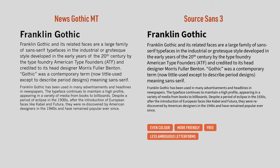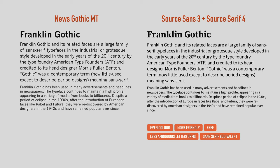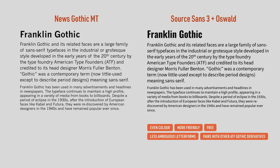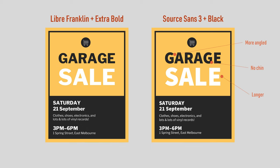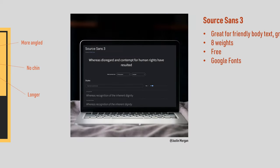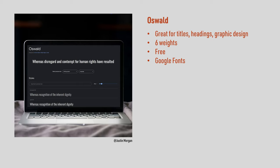Another great alternative to News Gothic is Source Sans 3. The text set in Source Sans 3 is more even and more friendly, and like Public Sans, it is less ambiguous, with a slightly shorter uppercase I and feet on the lowercase L. What's cool about Source Sans 3 is that it's part of a font family, so it pairs perfectly with its serif counterpart, Source Serif 4. Though if you want a matching condensed pairing, try Oswald — like League Gothic, it is a free version of Alternate Gothic, so it pairs perfectly with Source Sans 3. Source Sans 3 also looks great in poster designs, though compared to Libre Franklin, it goes in a slightly more humanist direction, which makes it look friendlier. Source Sans 3 is great for friendly body text. It comes in eight weights, and you can download it from Google Fonts. Meanwhile, Oswald is great for titles and headings — it comes in six weights and is also available on Google Fonts.